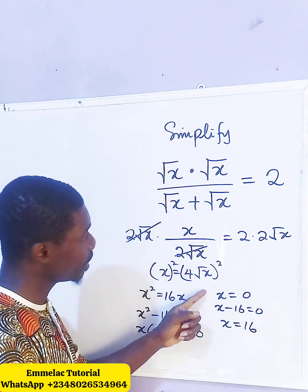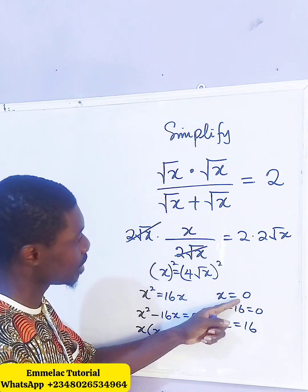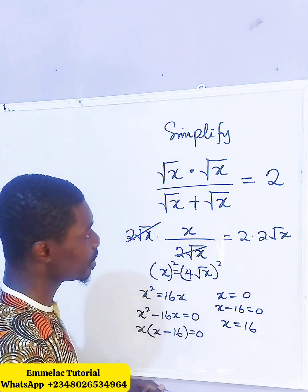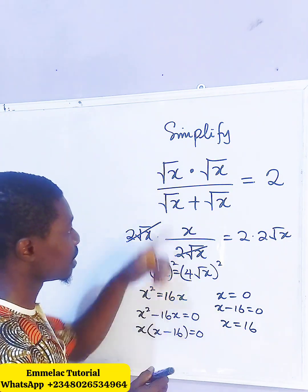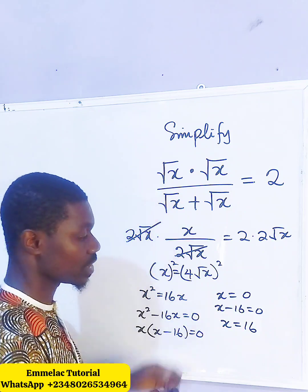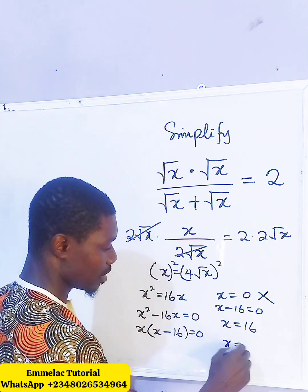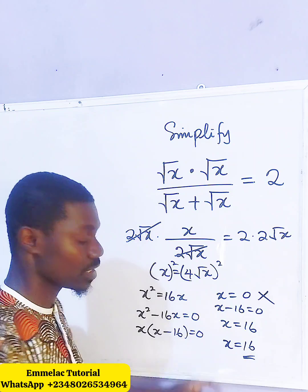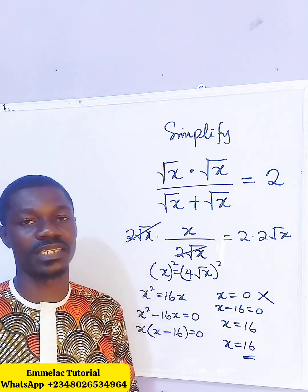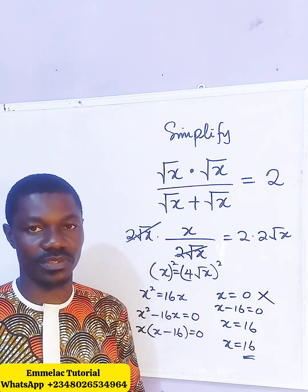But looking at if you plug in this value here, we end up having zero divided by zero, which means it's undefined. So we reject that for zero. So the value for x is what? Really 16. Thank you and God bless you.